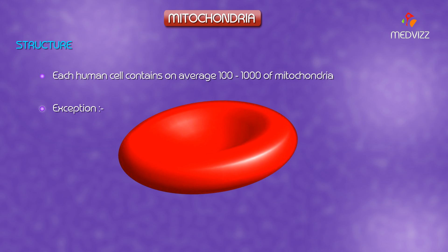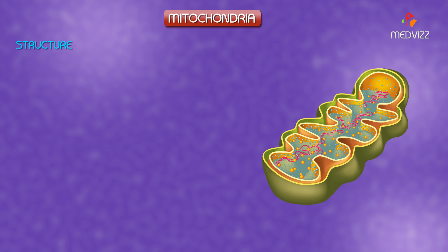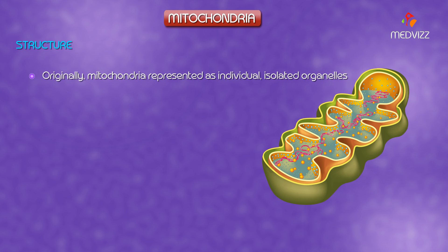The exception is mature red blood cells, which rely exclusively on anaerobic metabolism and contain no mitochondria. Although mitochondria were originally represented as individual isolated organelles, it is now recognized that mitochondria form a dynamic connected network, also called a reticulum or syncytium.